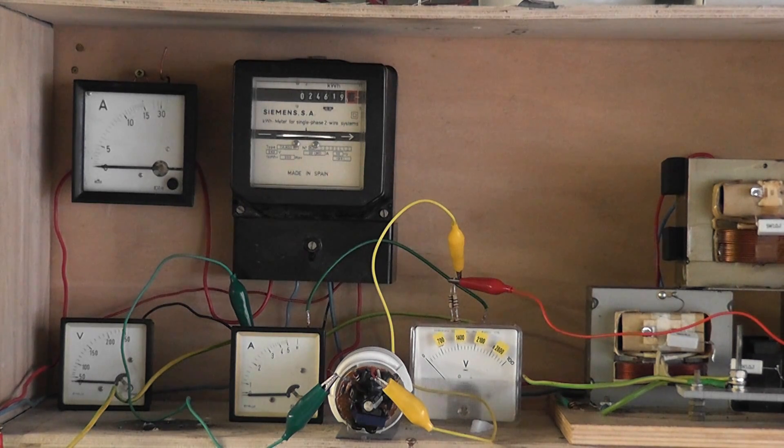I've got another camera on the kilowatt-hour meter to visualize the actual aspect of the current. That's a 600W meter Fabrik Dordrecht. Let's see what happens.